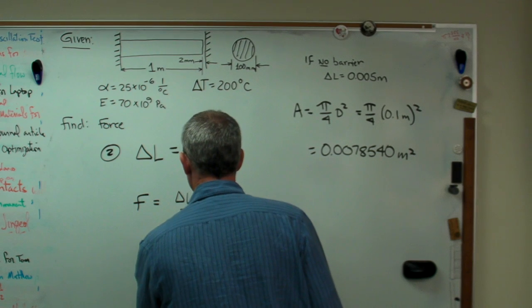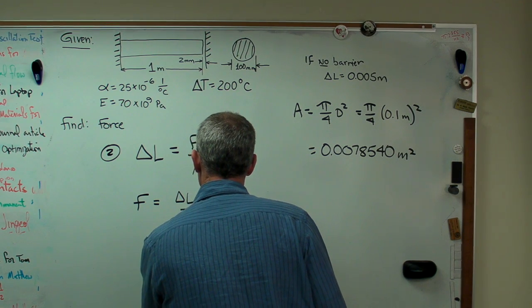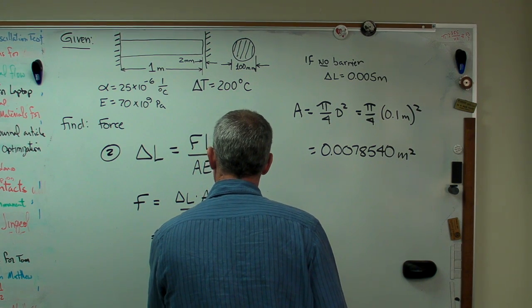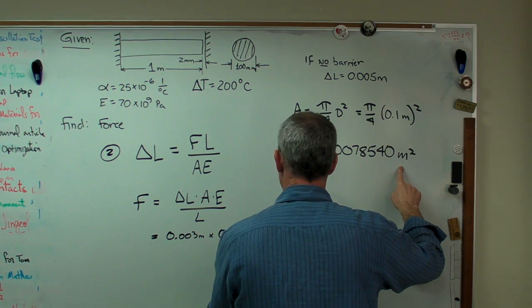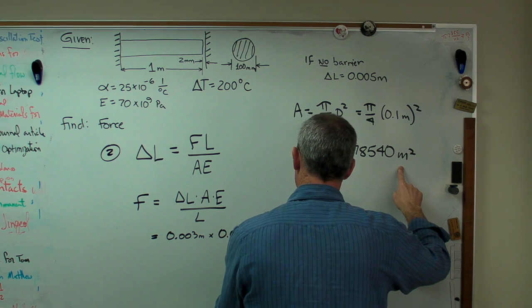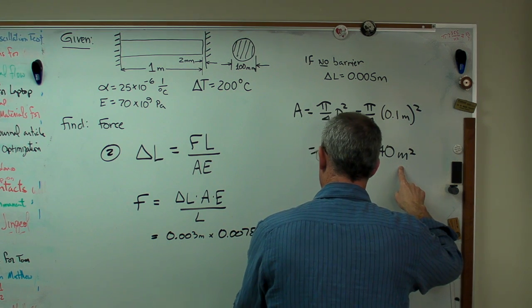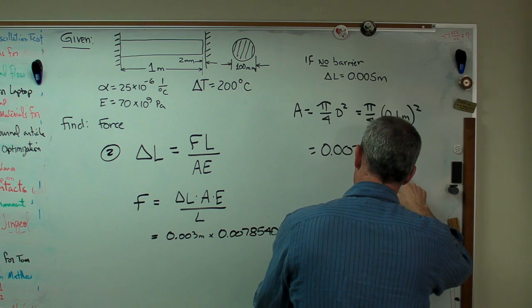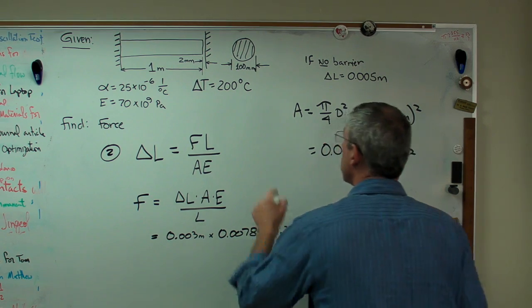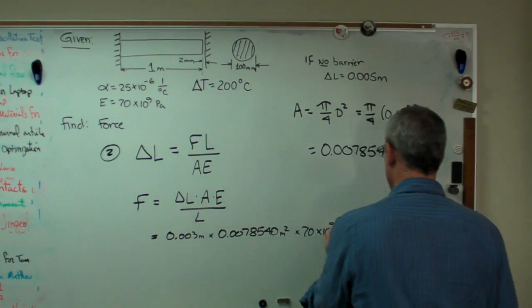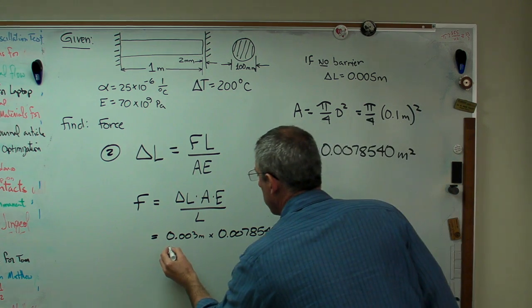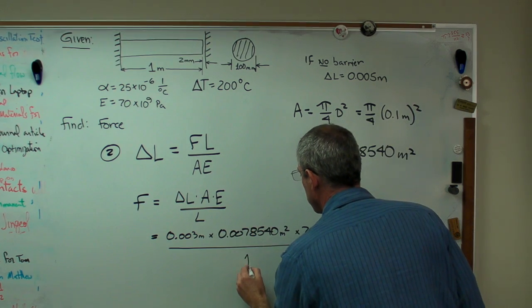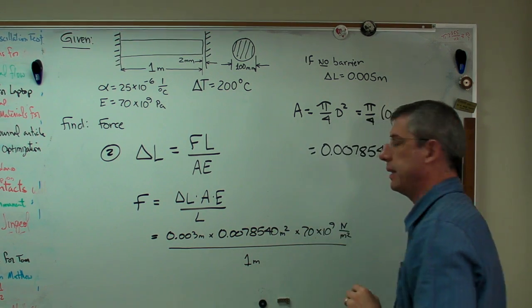So let's just put some numbers in there. 0.003 meters. I'm going to do everything in meters here. Times 0.0078540 meters squared. Times 70 times 10 to the ninth. This is in gigapascals. So I'm going to do this in newtons per meter squared. Divide the whole thing. Conveniently, L is 1 here.